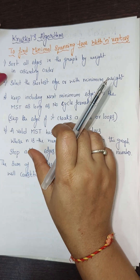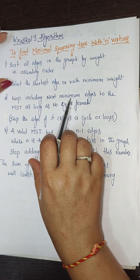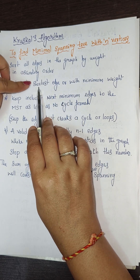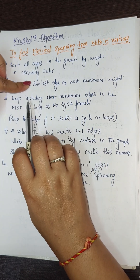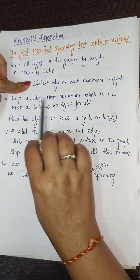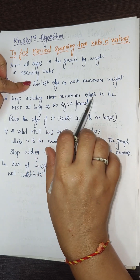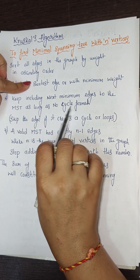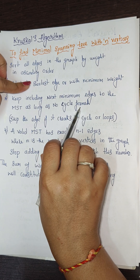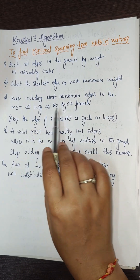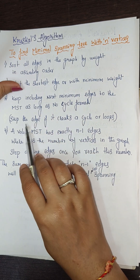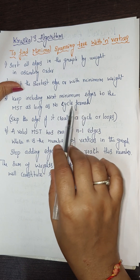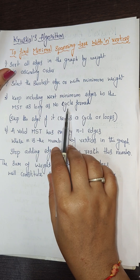Step 2: Select the shortest edge — the one with the minimum weight — first. Step 3: Keep including the next minimum weight edges into the MST as long as no cycle is formed. If any edge creates a cycle or loop, skip that edge.